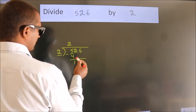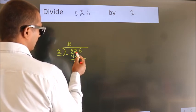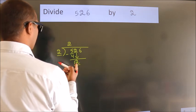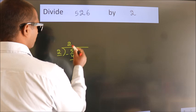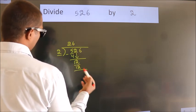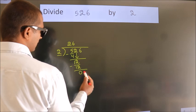After this, bring down the beside number. So 2 down, so 12. When do we get 12? In 2 table, 2 times 6, 12. Now we subtract. We get 0.